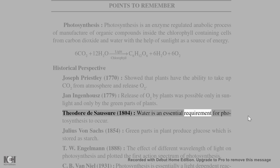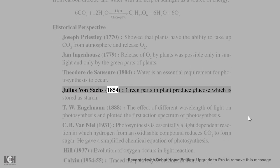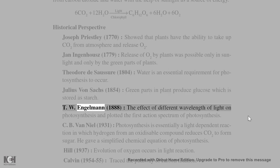Julius von Sachs (1854): green parts in plant produce glucose which is stored as starch. T.W. Engelman (1888): studied the effect of different wavelengths of light on photosynthesis and plotted the first action spectrum of photosynthesis.